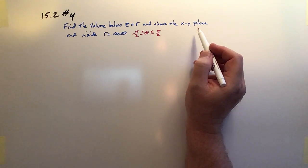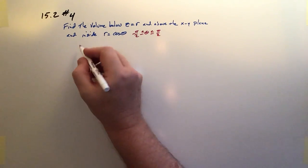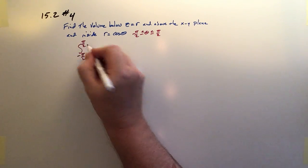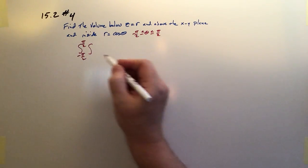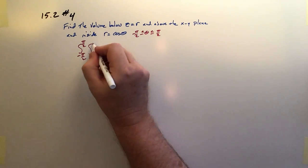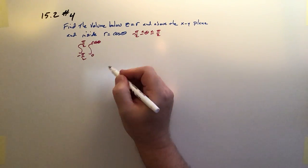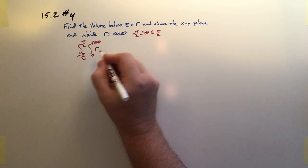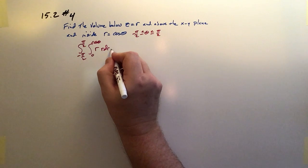Okay, so our double integral is going to be theta between these limits, negative pi over 2 and pi over 2. It's going to be r between these limits, zero all the way up to cosine theta. And then finally the function is just z, so that'll be r, and then r dr d theta.